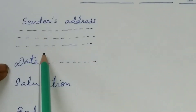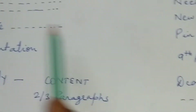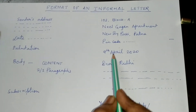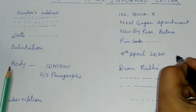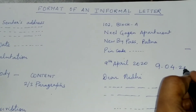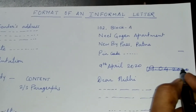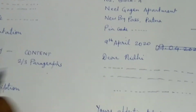After the sender's address, leave one line of space and then write the date. The person writing the letter will put the day on which he is writing it. For example, here I have put 9th April 2020. The date must be written in this way — never write it as 9/04/2020. That is wrong. Always write it as '9th April' or 'April 9, 2020'.